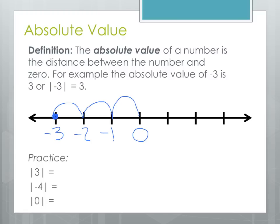Let's do the practice problems. The absolute value of 3 is 3 — it's 3 spaces away from 0. Once we take the absolute value, we can drop those vertical lines. The absolute value of negative 4 is 4, since it's 4 spaces from 0. And the absolute value of 0 is 0 — it's 0 spaces away from itself. So except for the special case of 0, the absolute value of any number is always a positive number.